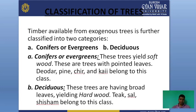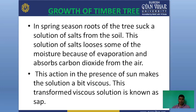Deciduous trees have broad leaves and yield hardwood. Teak, sal, and shisham belong to this class. Deciduous trees produce very hard wood with broad leaves. Teak, sal, and shisham fall in the deciduous category, which yields hardwood.